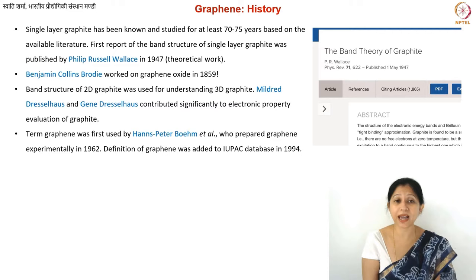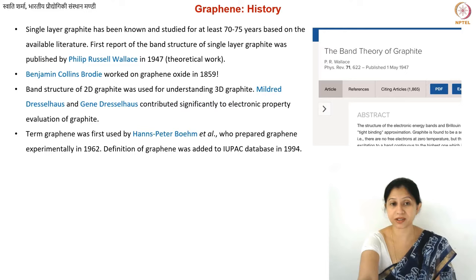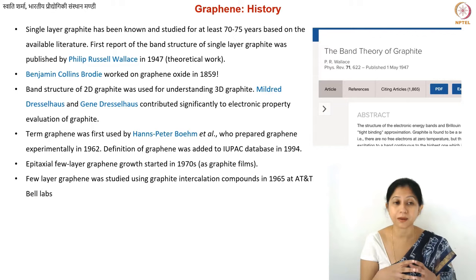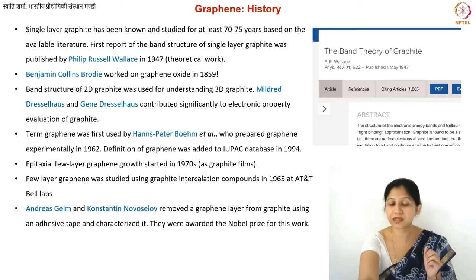The term graphene was used by Hans Pettelworm and his team as early as 1962. It became popular only in the late 20th or early 21st century. There are also some scattered studies — you can find papers from the 1960s and 70s which talk about few-layer graphene and also different fabrication methods, for example epitaxial growth.